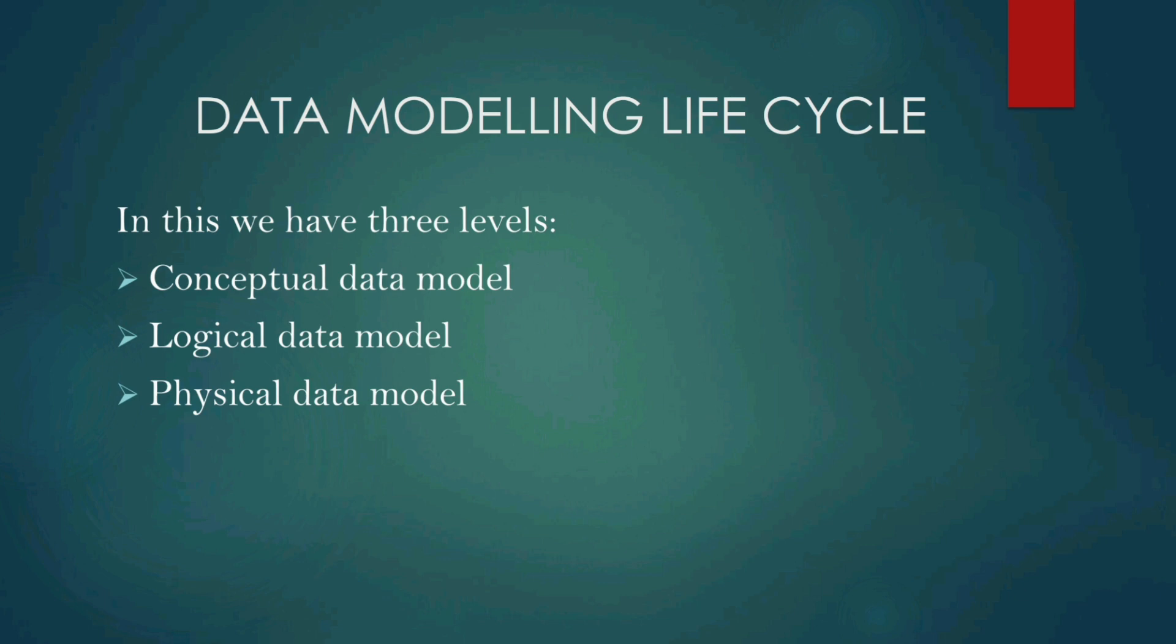In this we have three levels: conceptual data model, physical data model, logical data model. First, conceptual recognizes the highest level relationship and mainly explains the semantics. Semantics is nothing but a simple meaning.